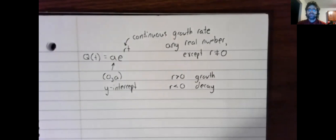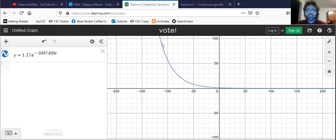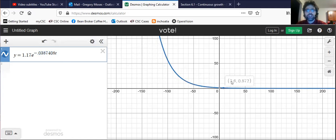We have seen that every exponential function has basically one of two shapes. Here is an exponential function where r is negative, negative 0.0387408, and you see the exponential function decreases.